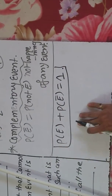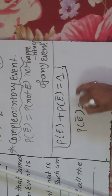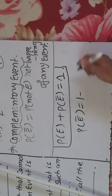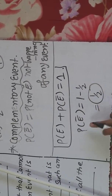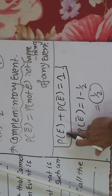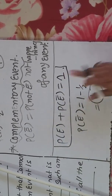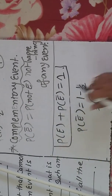Is formula ko hamesha 1 hogi — yeh hone ki probability aur yeh nahi hone ki probability, that is 1. Toh agar apan ko probability nahi hone ki find karni hai — jaise head aane ki probability 1 by 2 — toh head nahi aane ki probability 1 minus 1/2 equals 1/2. Toh yeh sabse important hai ki kisi bhi event ki hone aur nahi hone ki probability ka sum always 1 hota hai — that is P(E) + P(E bar) = 1.